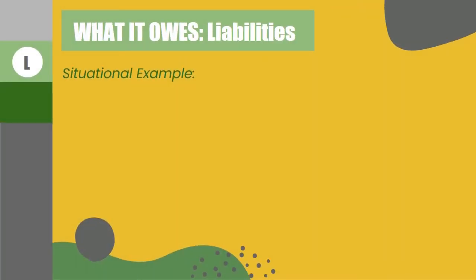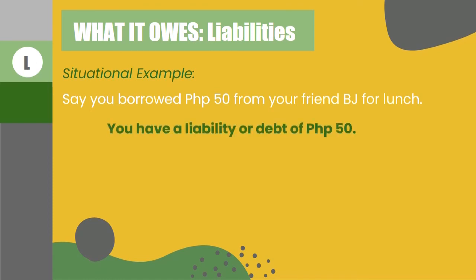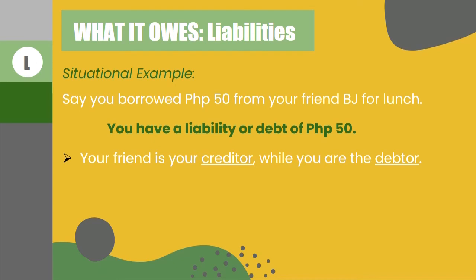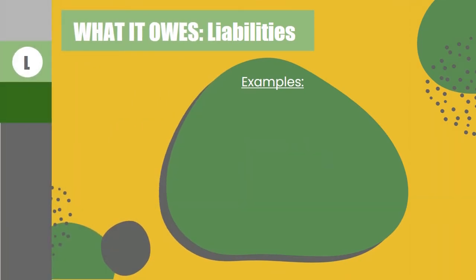To illustrate: let's say humiram ka ng 50 pesos sa kaibigan mong si BJ para sa iyong lunch. Magkakaroon ka ng liability or utang na 50 pesos na kailangan mong bayaran kay BJ. In this situation, ang kaibigan mo yung creditor or yung nagpa-utang at ikaw ang debtor or yung umutang. For example of liabilities, ang pinaka-common ay accounts payable at loan payable. Halimbawa, mag-order ka ng supply mula sa isang supplier on account basis — hindi cash ang pambayad at babayaran mo pa ito in the future, so you settled on account basis na obligation mo itong bayaran in the future.